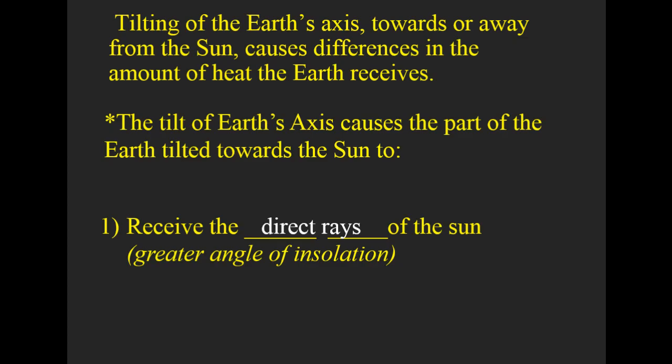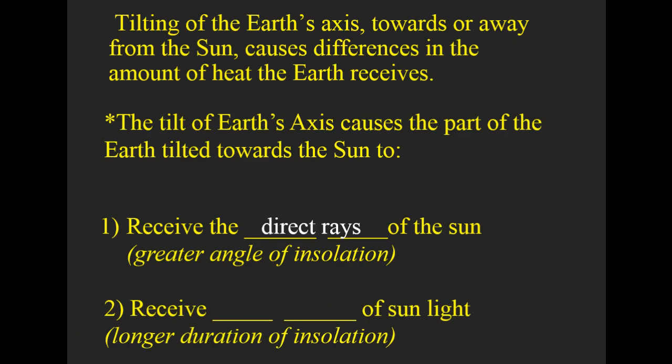It's at a greater angle of insolation when tilted towards the sun, and it will also receive more hours of sunlight. Now when I say Earth is tilting towards the sun, we're really referring to the northern hemisphere, because the southern hemisphere could be tilted towards the sun — and that's when we experience our winter. So when we say the Earth is tilted towards the sun, we're really referring to the northern hemisphere being tilted towards the sun.